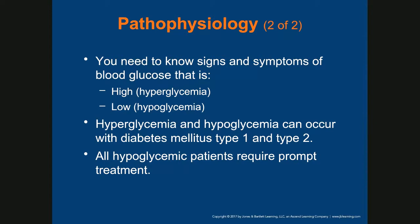High glucose levels are called hyperglycemia, and low levels are called hypoglycemia. Both hyperglycemia and hypoglycemia can occur with diabetes mellitus type 1 and type 2. Regardless of whether the patient has type 1 or type 2, they can have issues with blood sugar being too high or too low.